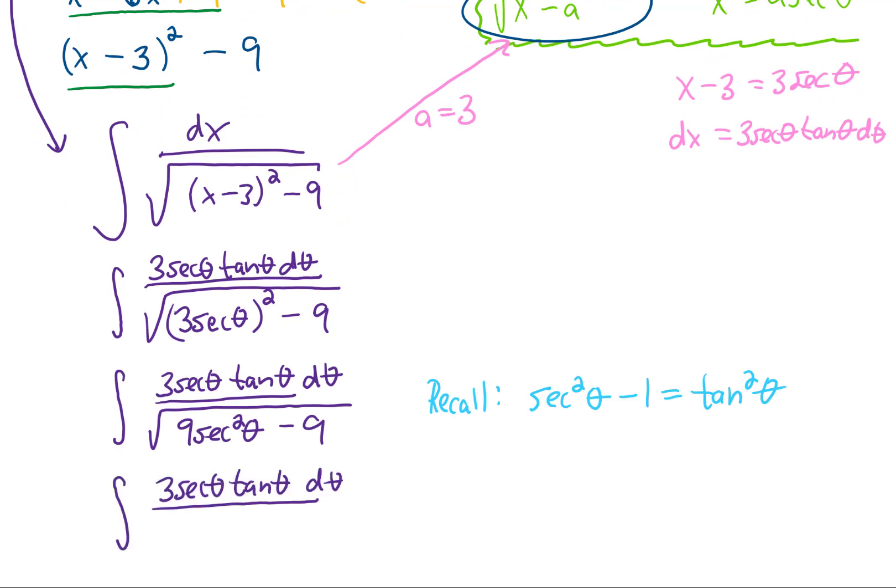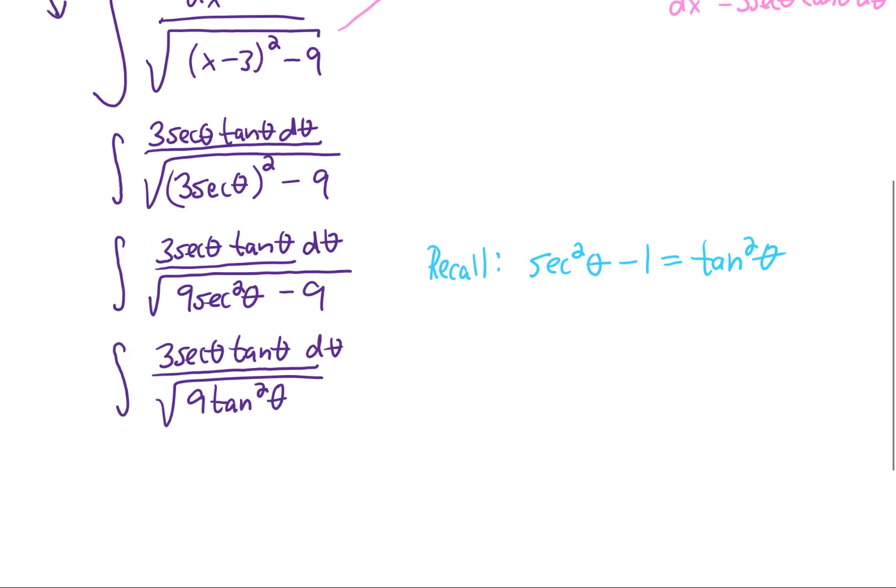In this case, 9 secant squared theta minus 9 can be turned into 9 tangent squared theta. We can then simplify that square root, keeping in mind that technically this would be an absolute value of tangent of x. But as we've explained in most of these other videos, we're going to assume that tangent of theta is greater than 0. And we can get rid of these absolute values and cancel the tangent from the numerator and denominator.